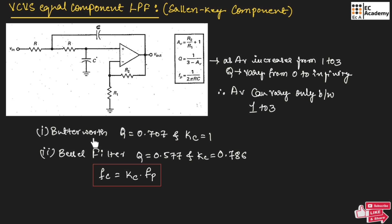To design a Butterworth filter, we can use these values of Q and Kc and use this formula to find the cutoff frequency. And similarly, to design Bessel filter, we can use these Q and Kc values and we can use this formula to find the cutoff frequency.